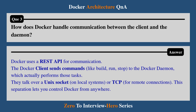Question 3: How does Docker handle communication between the client and the daemon? Docker uses a REST API for communication. The Docker client sends commands like build, run, stop to the Docker daemon, which actually performs those tasks. They communicate over a Unix socket on a local system or TCP for remote connections. This separation lets you control Docker from anywhere.